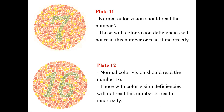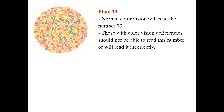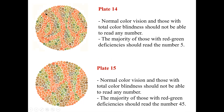In plate 11, normal people read it as 7, while in plate 12, normal people read it as 16. Total color blindness cannot read any number in plates 11 and 12. In plate 13, normal people read it as 73. In plates 14 and 15, there are no numbers for normal people, but people with red-green color deficiency will read plate 14 as 5 and plate 15 as 45.